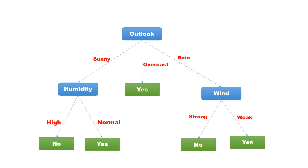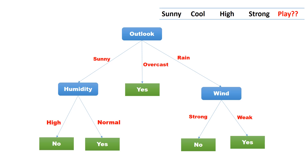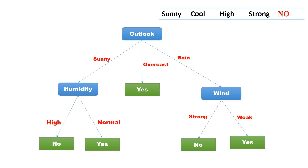All branches have now reached a leaf node, so we can stop the process. Here is our final tree. Now let us use this model to classify a new record. Start with the root node: outlook is sunny, so follow the branch labeled sunny. Humidity is high, so follow the branch labeled high. We reach the leaf node with label no. Hence, the prediction for the day is no.